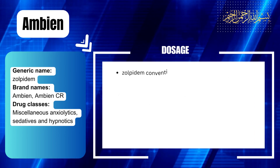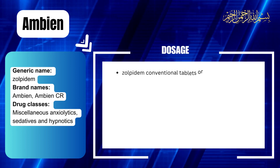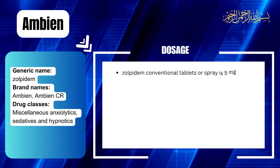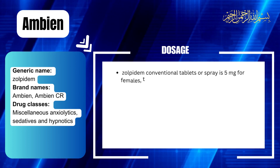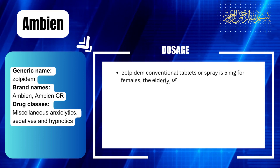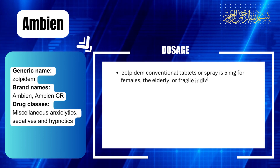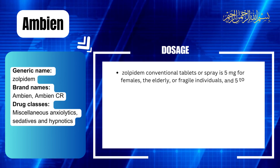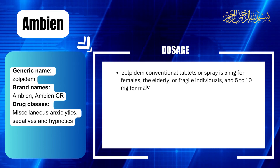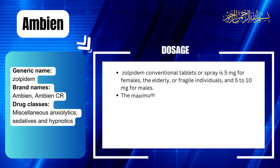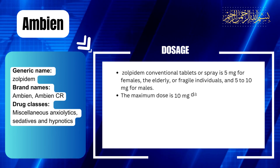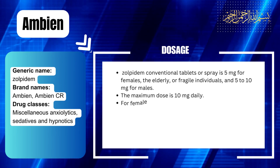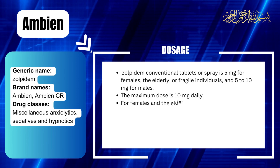The recommended adult dose of Zolpidem conventional tablets or spray is 5 mg for females, the elderly, or fragile individuals, and 5-10 mg for males. The maximum dose is 10 mg daily.